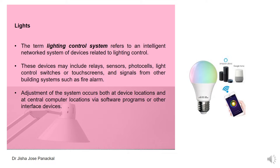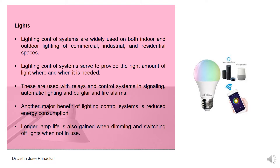These are all part of the lighting control system. Adjustment of the system occurs both at device locations and at central computer locations via software programs or other interface devices. So we can operate this system at device locations or in a centralized remote manner. These systems are widely used in both indoor and outdoor lighting of commercial, industrial, and residential spaces, providing the right amount of light where and when it is needed.